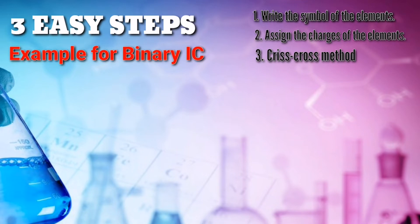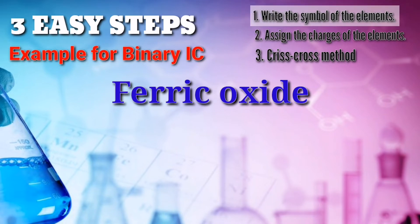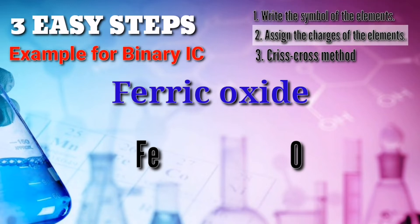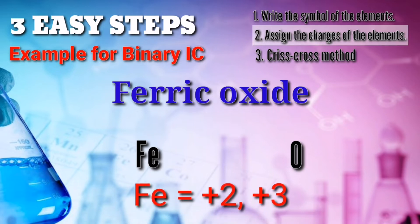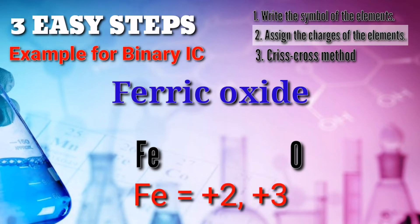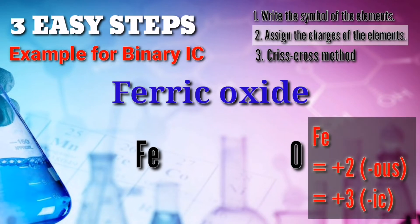Now, let's have another example. We have ferric oxide. Let's go back to the first step: write the symbol of the elements. Ferric is iron, and oxide is oxygen. Now, let's have the second step: assign the charges of the elements. Take note, iron has two charges: positive 2 and positive 3. Recall and always remember the suffixes OUS and IC. The suffix OUS is for the lower oxidation number and the suffix IC is for the higher oxidation number.